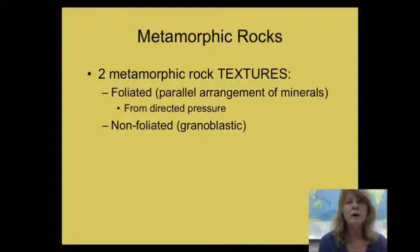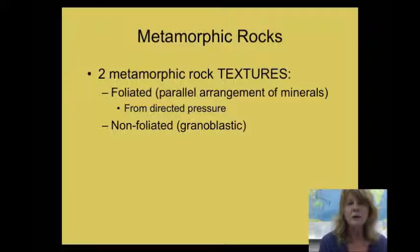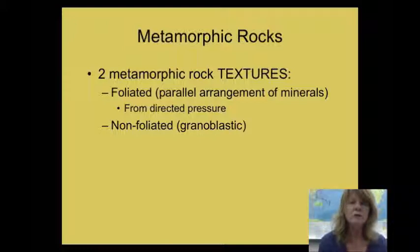Foliation refers to the parallel arrangement of minerals. Some minerals are naturally flat or planar in shape. In a sedimentary environment, those minerals might arrange themselves in a somewhat random pattern. But when subjected to directed pressure — a squeezing, shearing, or tensional stress — the minerals can start to align themselves parallel to each other, and that's evidenced by certain clues you look for in the rock. Foliation happens because of directed pressure, meaning there is a directionality to the stress the rocks are under.